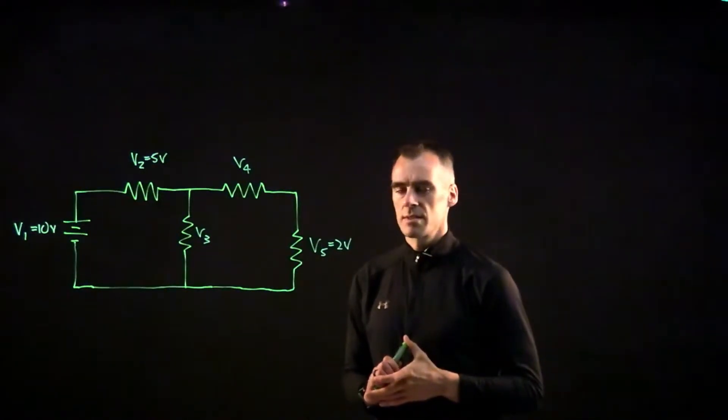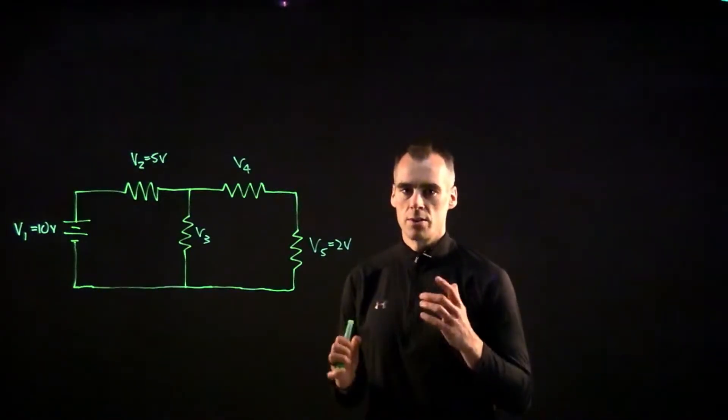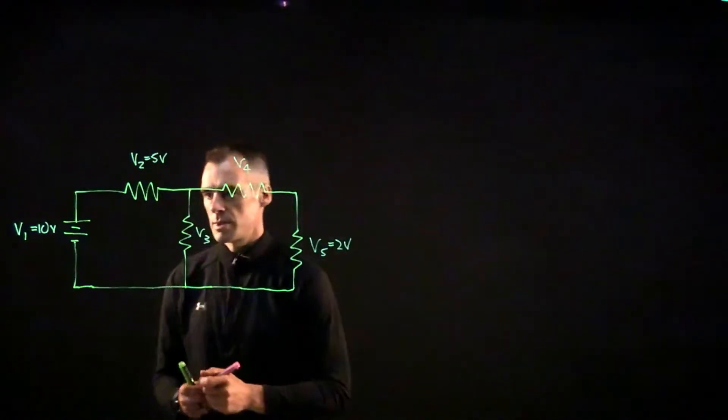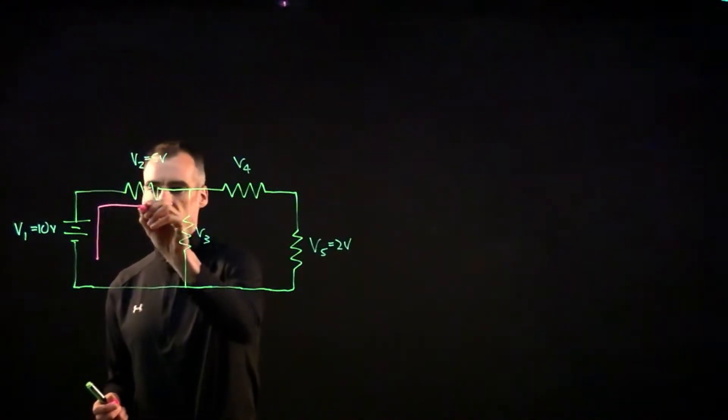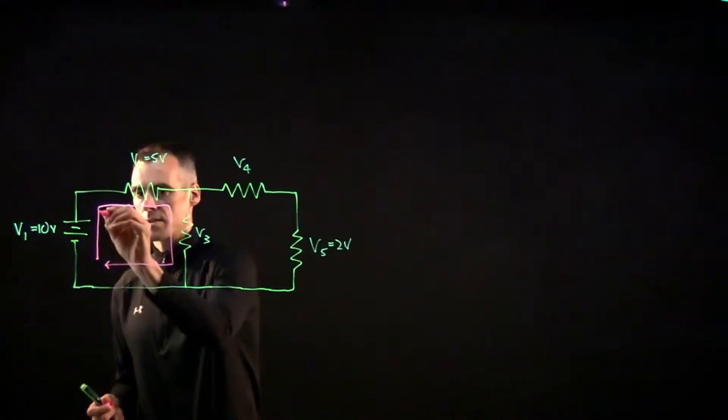In order to start this, let's start off with a loop, because that's what Kirchhoff's voltage law is about. It's about loops and voltage differences. So our first loop is maybe the most obvious one, just this internal one right here. Let's say I'm starting here, going around and back in this direction.